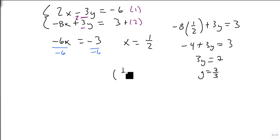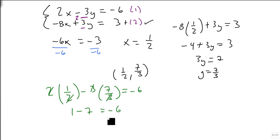So our point appears to be 1 half, 7 thirds. And we've already checked it against equation 2. If we check it against equation 1, we get 2 times 1 half minus 3 times 7 thirds equals minus 6. It's nice that everything divides out. 1 minus 6 is minus 6. Since it does, in fact, work for both equations, we know that our solution is 1 half, 7 thirds.